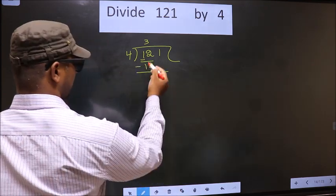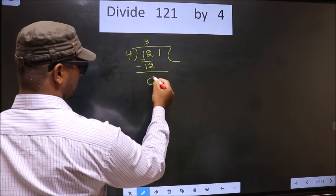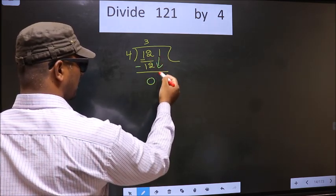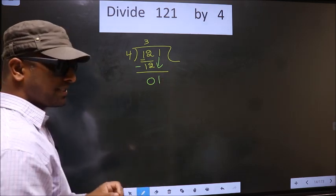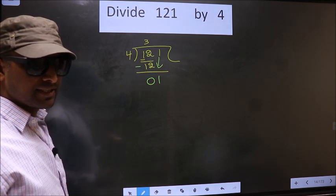Now you subtract. 12 minus 12, 0. Now we bring the beside number down, that is 1. This is where the mistake happens. And the mistake is this.